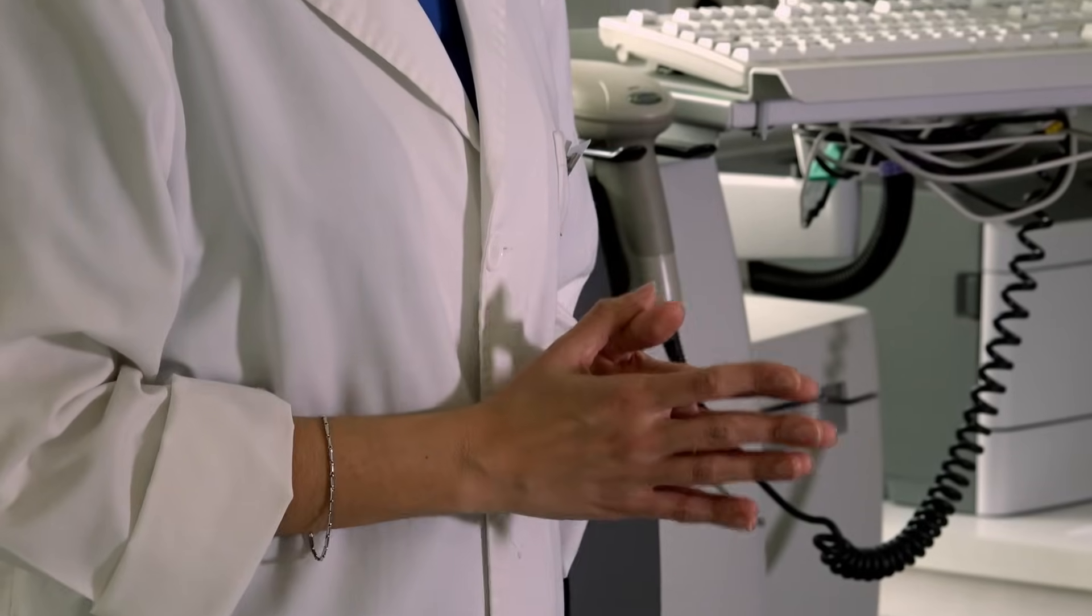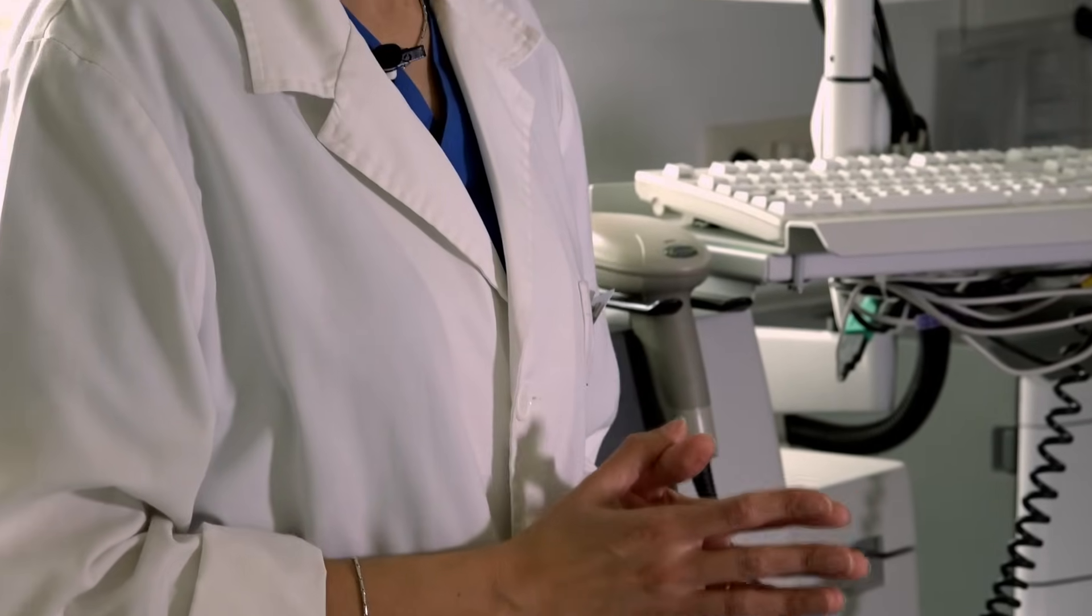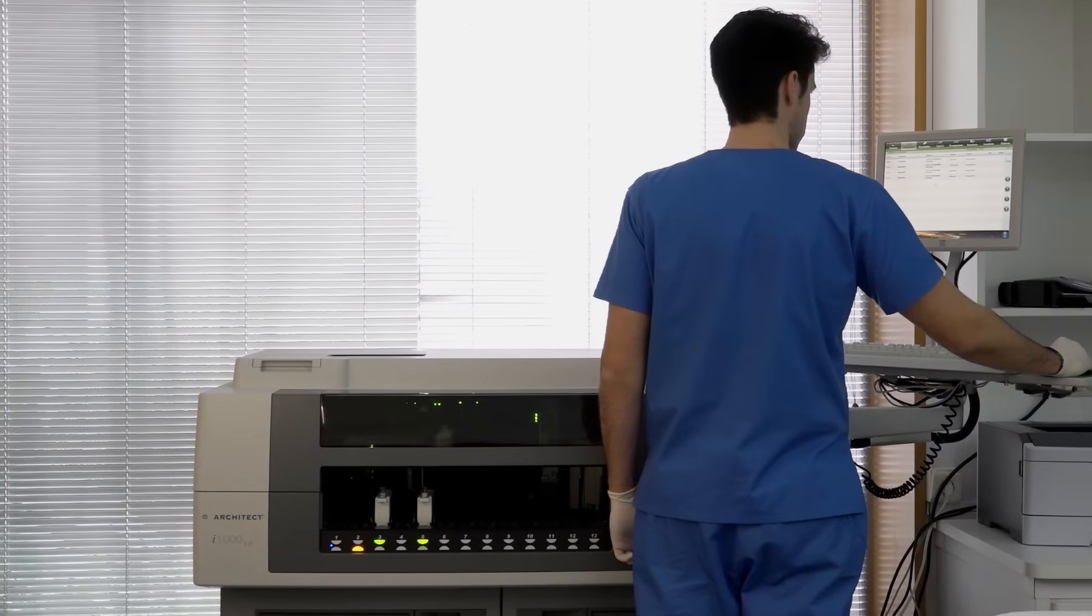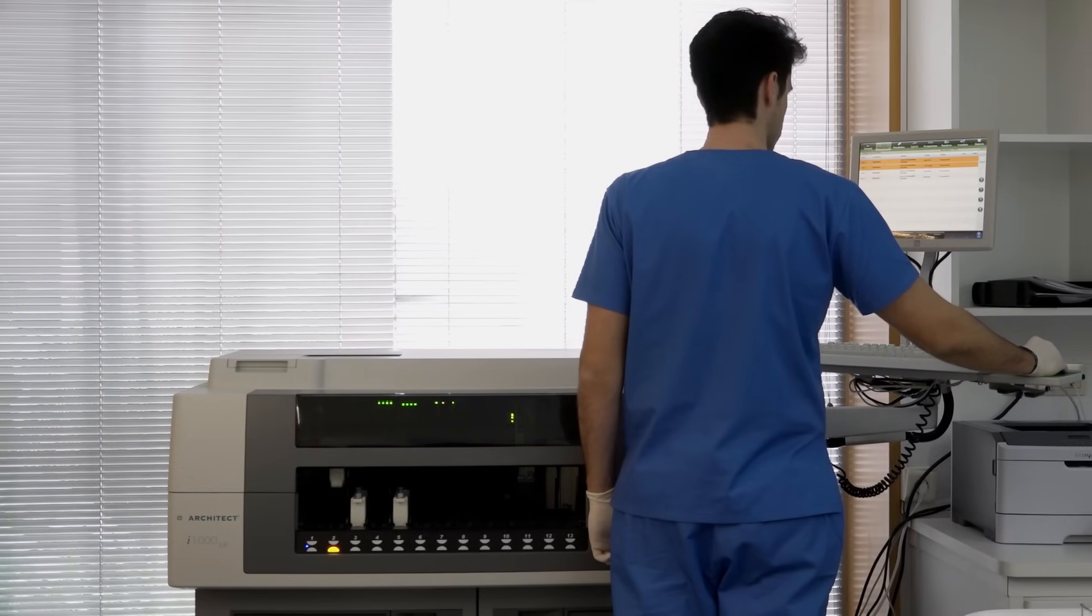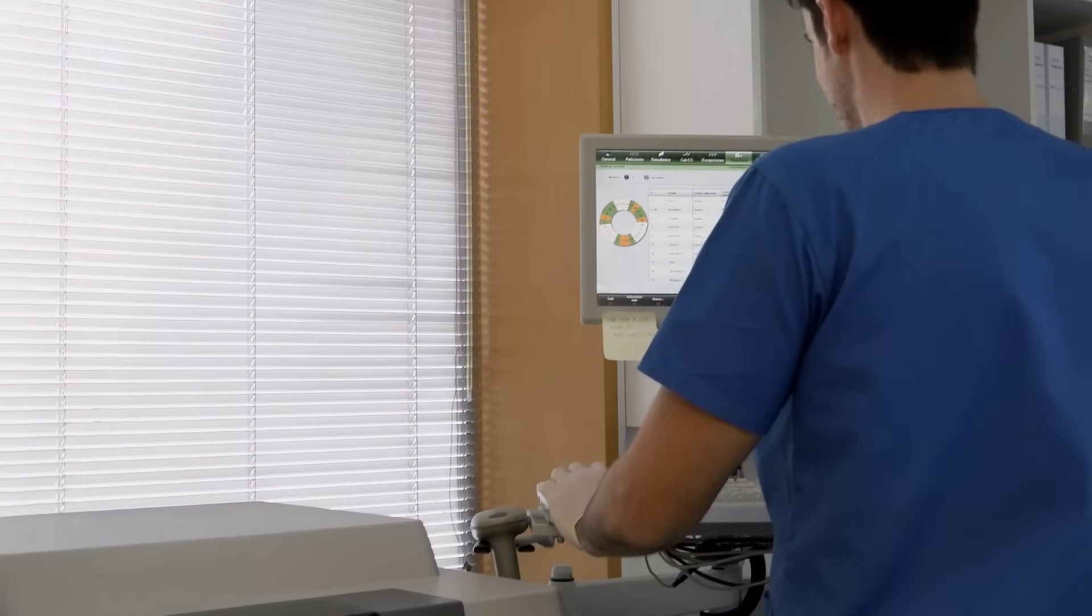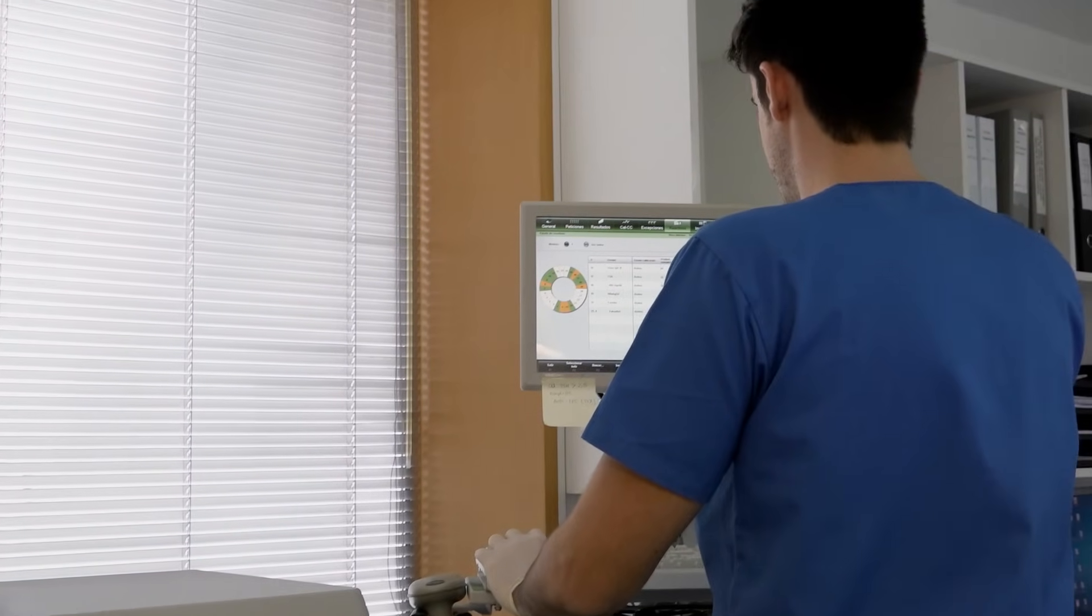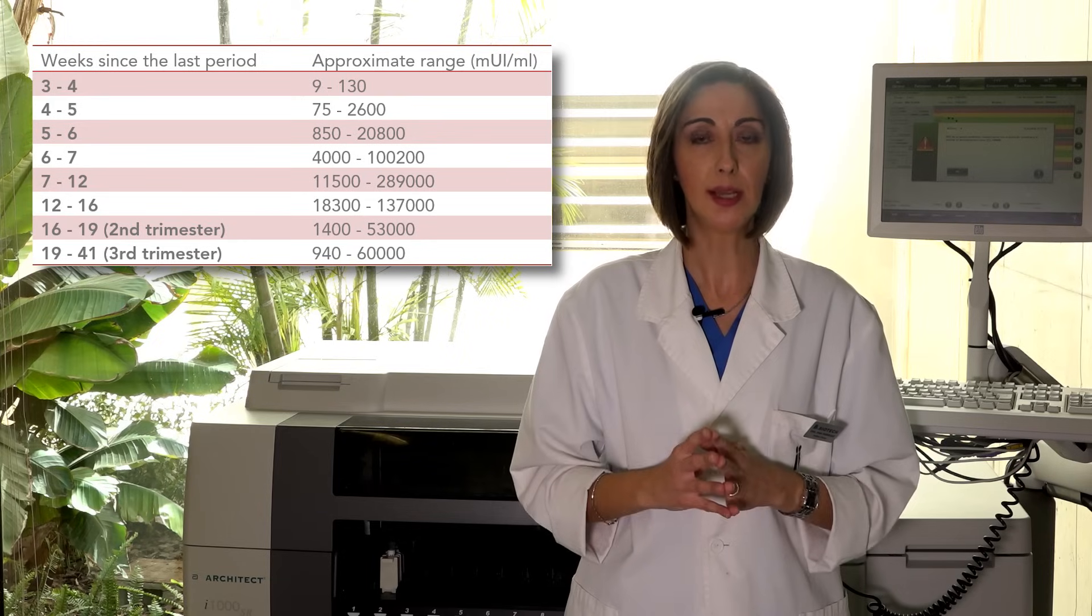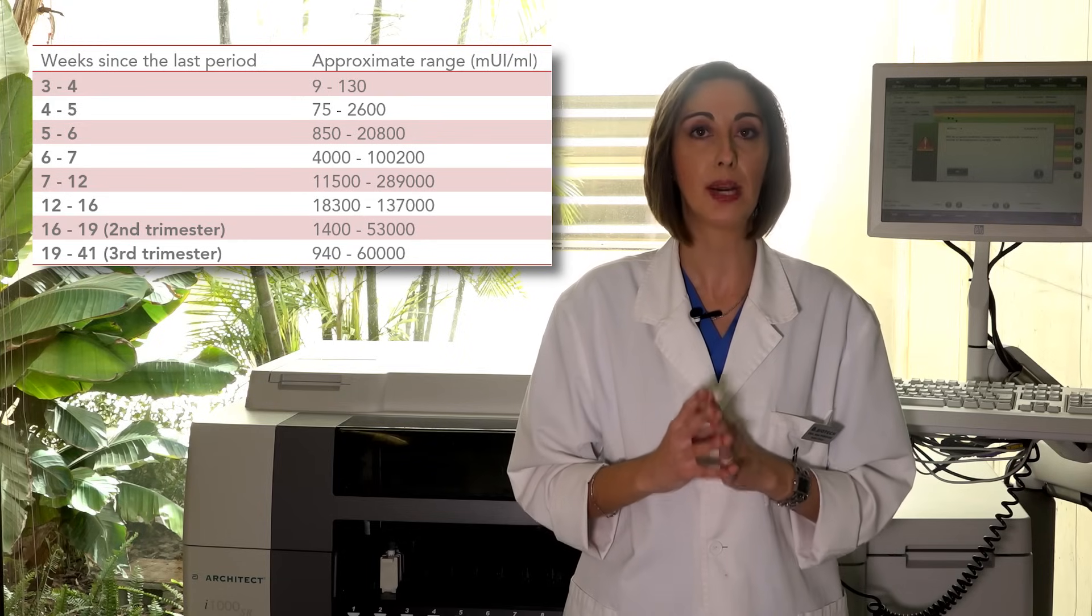Serum HCG levels increase from conception up until weeks 12 to 14 and then progressively decrease. The levels at which this hormone is found vary depending on each pregnancy. Therefore, the values considered normal and indicated in the table are very wide-ranging and should be interpreted as a general indication. The table indicates HCG values in our laboratory.